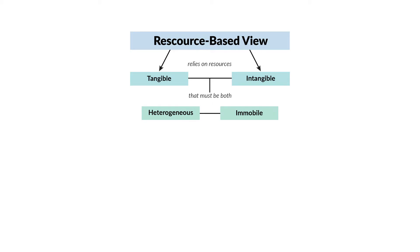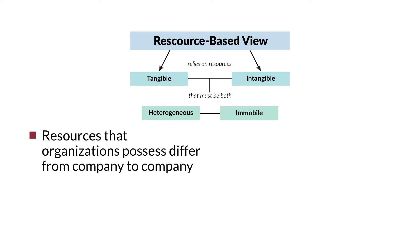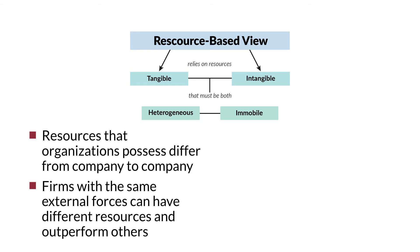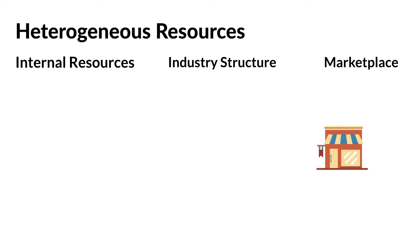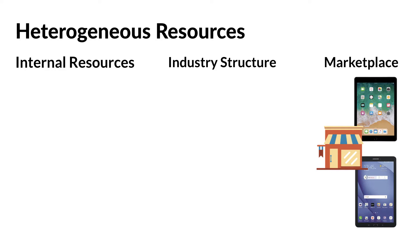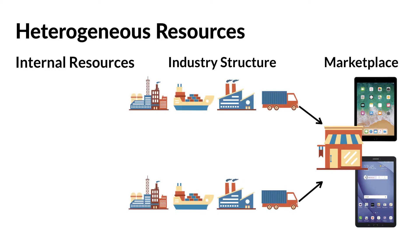The resource-based view is also based on two key assumptions: heterogeneity and immobility. The assumption that resources are heterogeneous means that resources differ from company to company, and that firms in the exact same industry with the exact same external forces can still have different internal resources that lead to differential firm performance. For example, Apple and Samsung both compete in the tablet and smartphone markets and share the same industry structure.